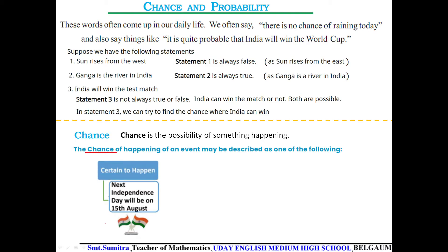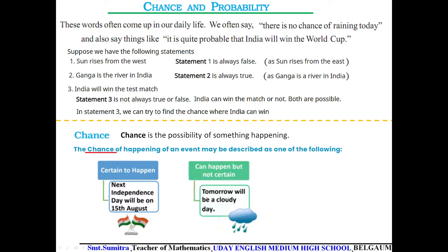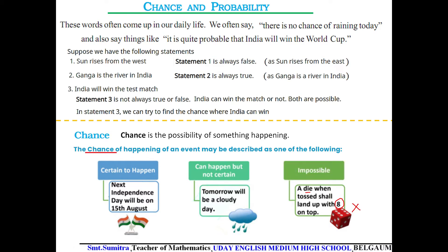Another example: 'Tomorrow will be a cloudy day' — it may or may not be, so it can happen but is not certain. Another example: 'A die when tossed shall land up with 8 on top' — a die is six-sided, so 8 on top is not at all possible; we call this an impossible event. Chance is nothing but the possibility of something happening.